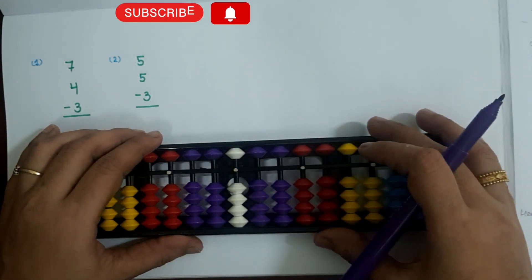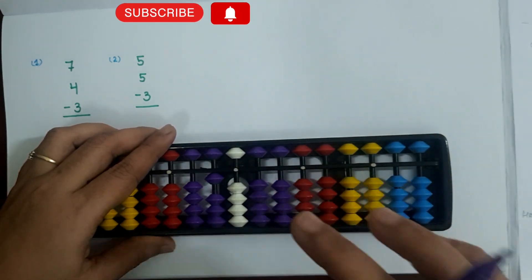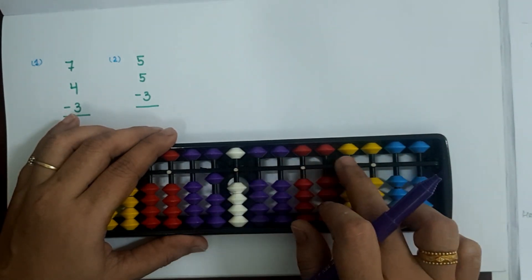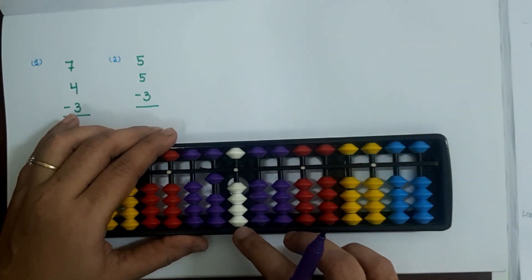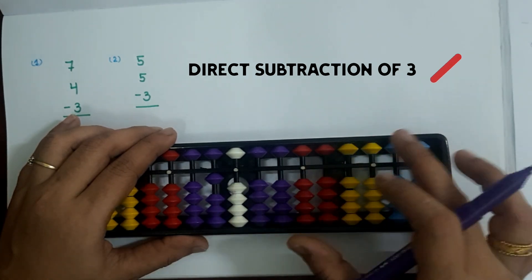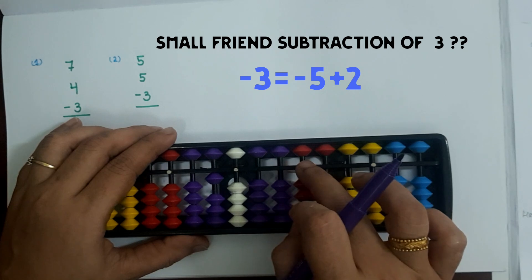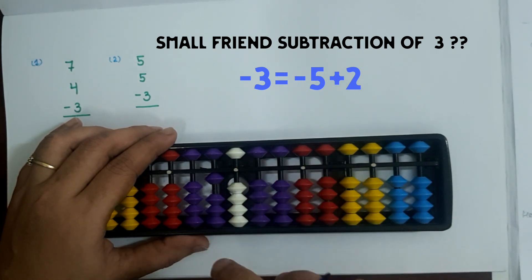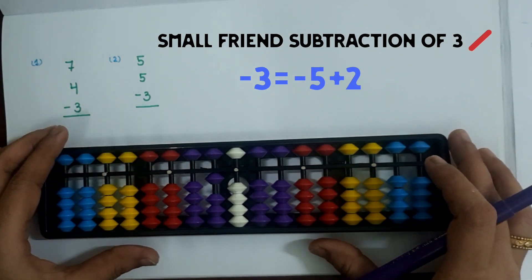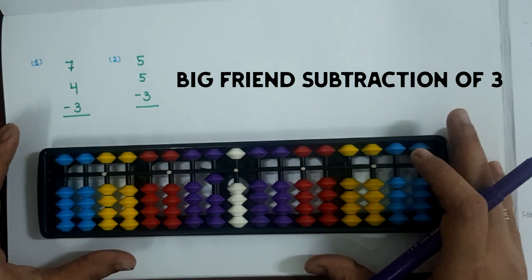Now the second sum: 5 plus 5 minus 3. 5 plus 5 is plus 10 minus 5 — here I used the big friend addition of 5. Then we need to subtract 3. At one slot no lower bead is touching the value bar, so direct subtraction of 3 is not possible. Can we apply the small friend subtraction of 3, which is minus 3 equals minus 5 plus 2? The bead of 5 is not touching the value bar, so we cannot subtract 5. Small friend subtraction of 3 is also not possible here. So in order to solve both these sums, we have to apply the big friend subtraction of 3.